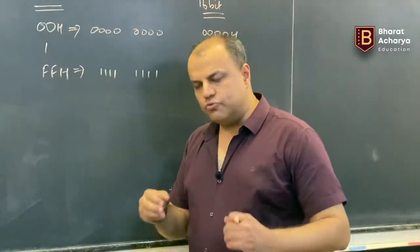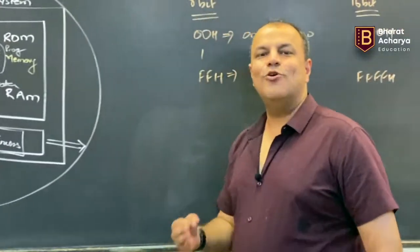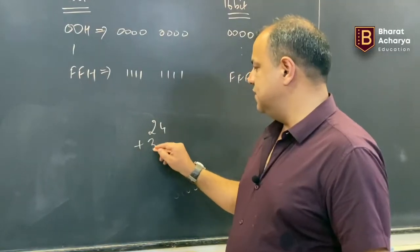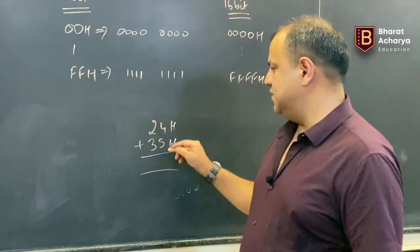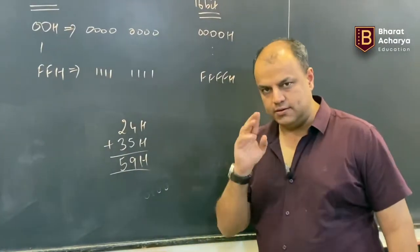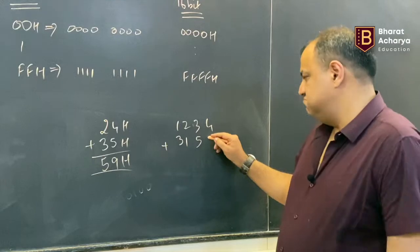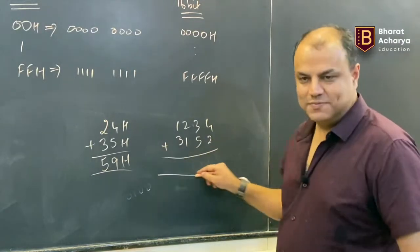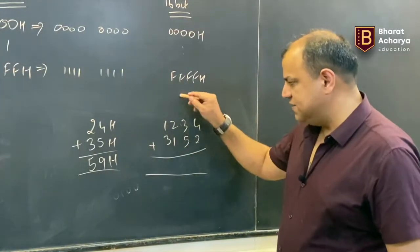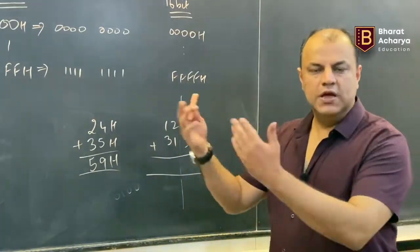When the processor is an 8-bit processor, it can operate on 8 bits at a time. For example, 24 + 35 (all hexadecimal): 5+4=9, 2+3=5, result 59 — done in one cycle. But for 1234 + 3152, these are 16-bit numbers. The 8-bit processor cannot do this in one cycle — it requires two cycles.